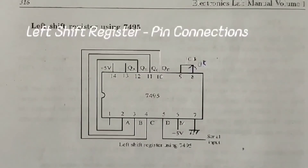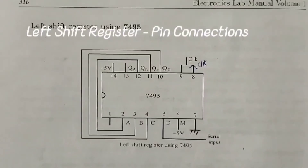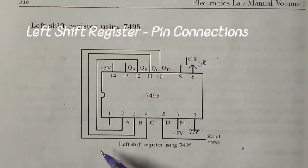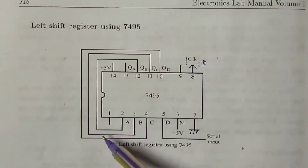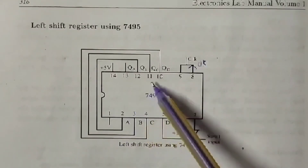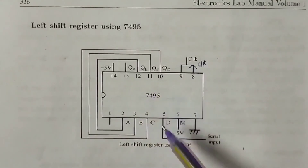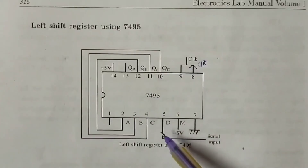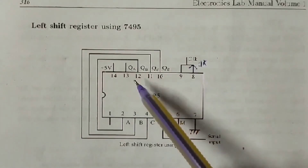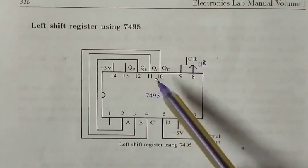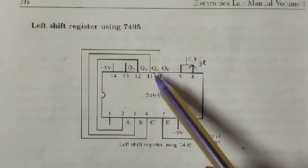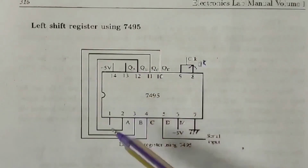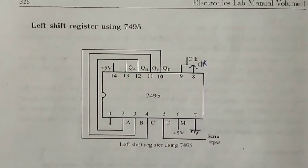For the left shift register using IC7495, the differences from the right shift register are: pin 1 is left free. Pin 2 is connected to pin 12 (QB). Pin 3 is connected to pin 11 (QC). Pin 4 is connected to pin 10 (QD). Pin 13 is directly connected to QA. These feedback connections route data from right to left.